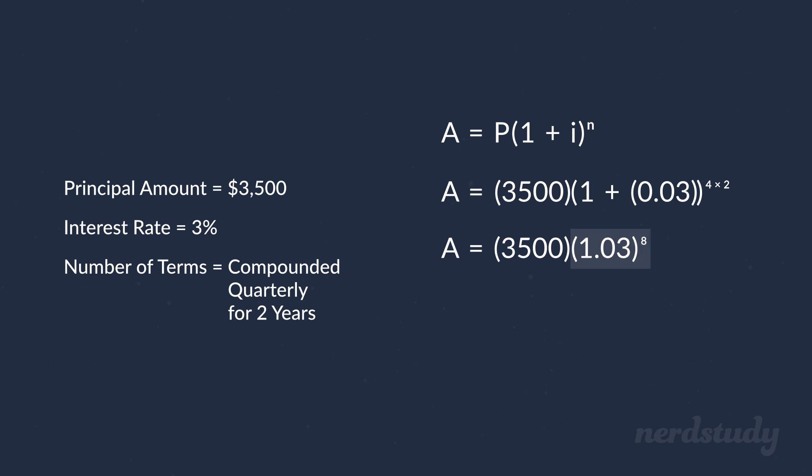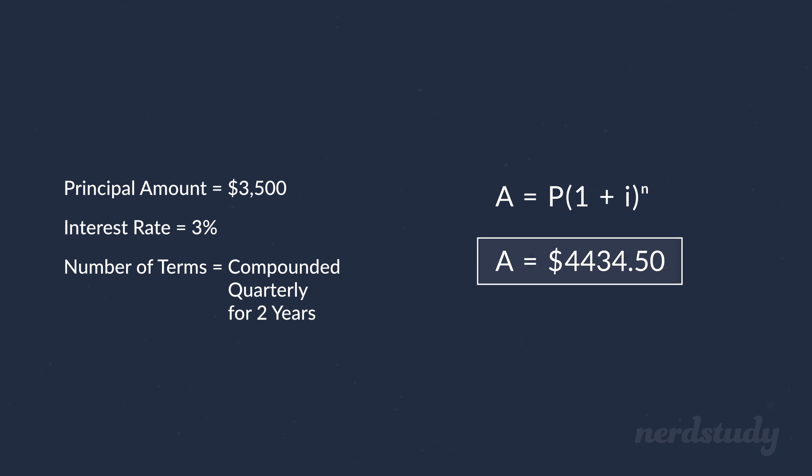Computing this gives roughly 1.267, and multiplying that by 3,500 gives a final value of roughly $4,434.50. Awesome! So this is the value of what the investment will be worth at the end of 2 years with this compound interest.